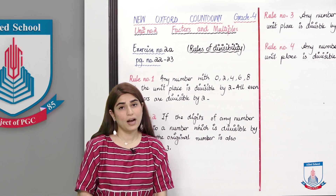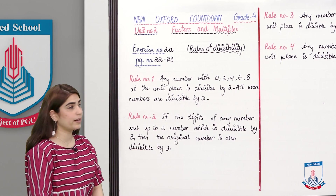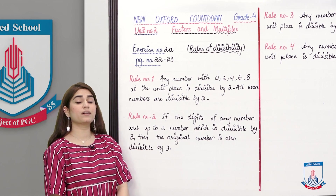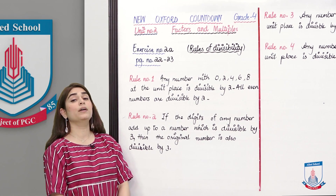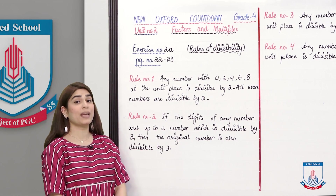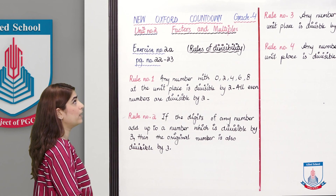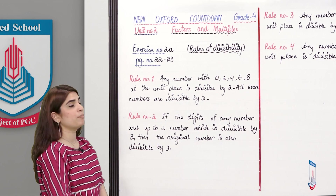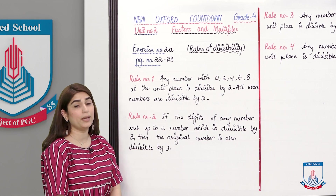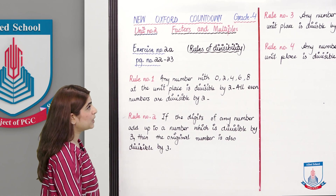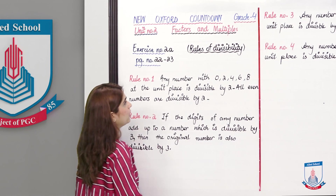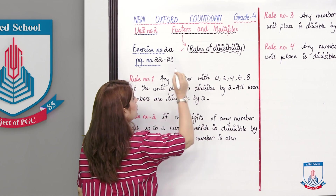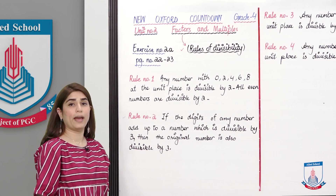For today's lesson, we are going to start Unit No. 2 which is called Factors and Multiples. In Exercise 2A, on pages 22 and 23, the first thing we will look at is the Rules of Divisibility. Factors are connected to the rules of divisibility.